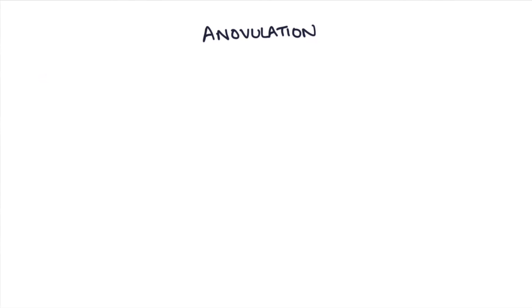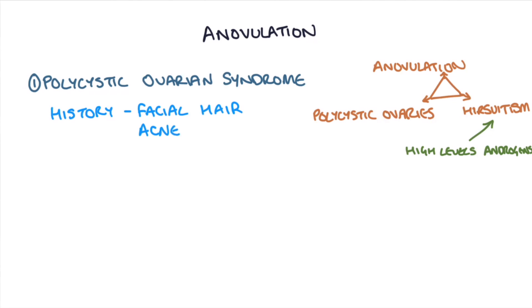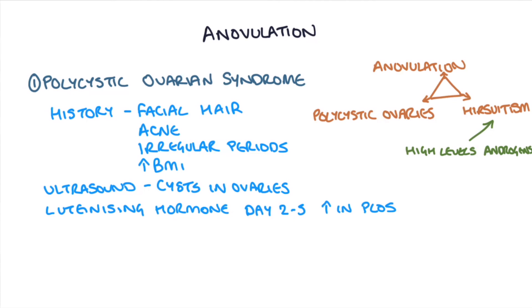If a woman is not ovulating, we need to find out why. The most common cause is polycystic ovarian syndrome (PCOS), which is a triad of anovulation, polycystic ovaries, and hirsutism due to high levels of androgens. A history of facial hair, acne, irregular periods, and typically a raised BMI are suggestive. We can confirm the diagnosis with history and a pelvic ultrasound to see the cysts in the ovaries. LH checked on day 2–5 will be raised in PCOS, as will androgen hormone levels.